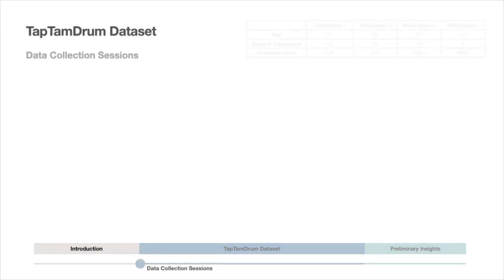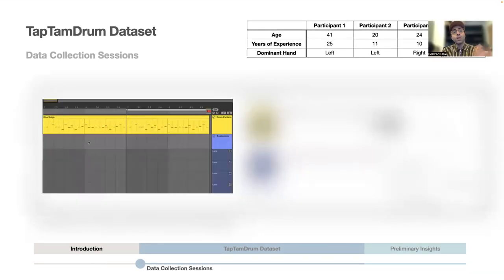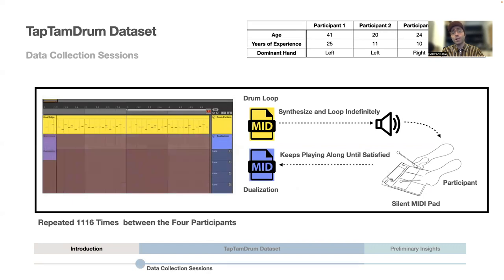For the data collection sessions, we asked four experienced drummers to take part in the experiments. For each session, participants would repeatedly listen to a two-bar pattern, and after one or two repetitions would start to play their dualized interpretations on top of the looping pattern. The participants were allowed to continue their dualizations indefinitely until they felt confident in the accuracy of the dualizations. All the drum patterns in all of the sessions were synthesized using the same sound source, and we did not provide any auditory or visual feedback from the dualized patterns while the participants were dualizing the patterns.